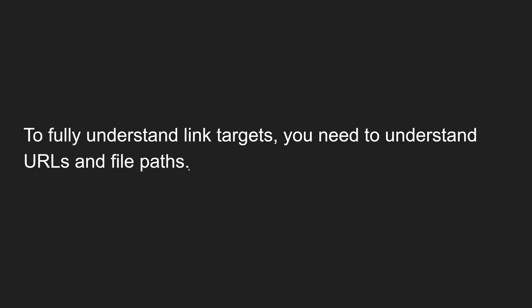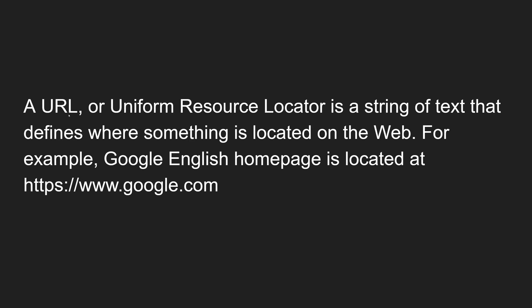To fully understand link targets, you need to understand URLs and file paths. A URL, or Uniform Resource Locator, is a string of text that defines where something is located on the web. It is a string of text that explains where the web page or document is located. For example, the Google English homepage is located at https://www.google.com. So this address is called a URL.